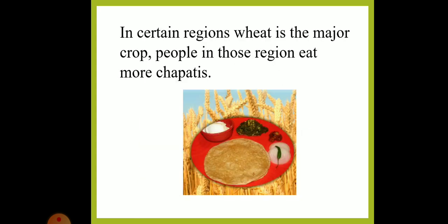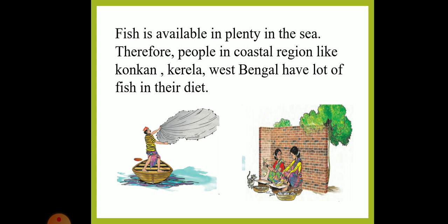In certain regions, wheat is the major crop. People in those regions eat more chapatis. Different dishes are made from wheat in that area. Children, we know fish is available in plenty in the sea. Therefore, people in coastal regions like Kokan, Kerala, and West Bengal have a lot of fish in their diet.